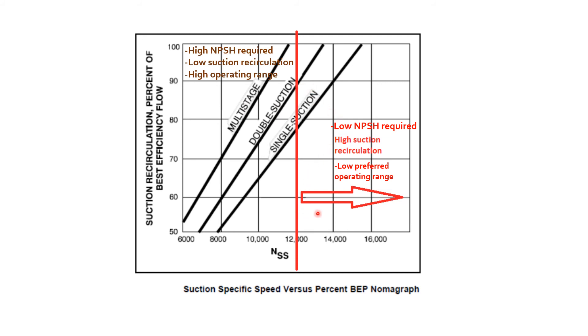If the NSS is greater than 12,000, then what happens? The advantage is that the pump will have low NPSHR requirement. But on the other hand, there will be a chance of high suction recirculation, and third, the operating range of the pump will be lower. For example, if a pump has an NSS of 40,000...